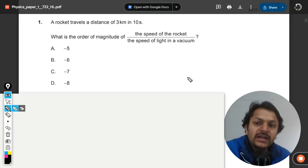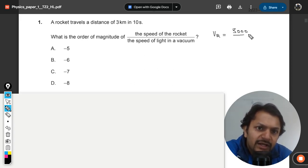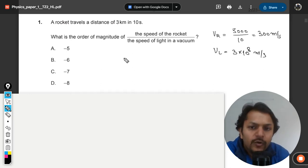So kind of easy question, let's see. First of all, we will find the speed of the rocket, and that is given by 3000 meters divided by 10, so that can be taken as 300 meters per second. And what is the speed of light? 3 into 10 raised to power 8 meters per second.